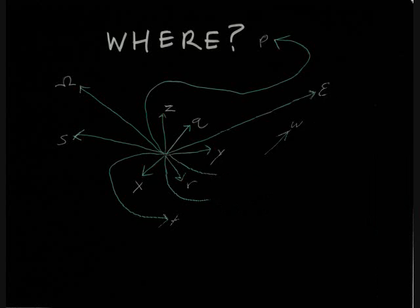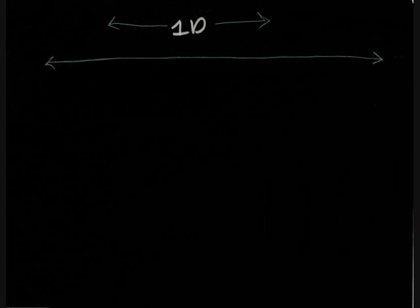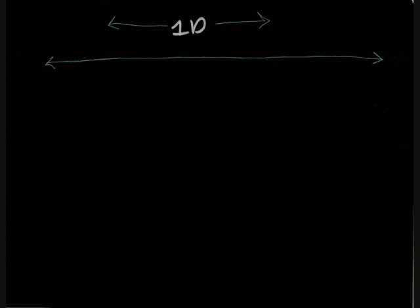The answer is rather subtle. Imagine a thread so thin that it only has one dimension: length. Now imagine there's an ant walking on the thread. He can only go back and forth, right? Wrong. He can also crawl around the thread clockwise and counterclockwise.